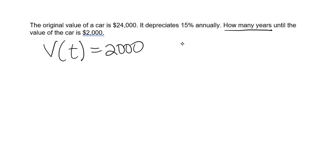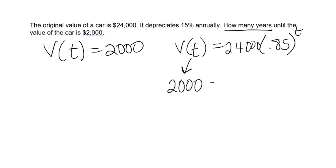So in our equation, value of time is 24,000 times 0.85 to the T power, we're going to substitute 2,000 as our ending value and solve for T. We've learned a new inverse operation that allows us to solve and get a variable out of the exponent. We'll eventually use logs here. But before we can use log, we have to get the base to the T power by itself.